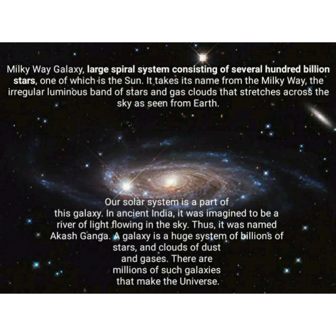Now we'll see the Milky Way galaxy. Our solar system is part of the Milky Way. In ancient times, it was imagined to be a river of light flowing in the sky and was also known as Akash Ganga. The Milky Way is a large spiral system consisting of several hundred billion stars, and one of those stars is our Sun. A galaxy is a huge system of billions of stars and clouds of dust and gases. There are millions of such galaxies that make up the universe.